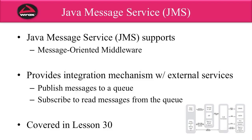Java EE also has support for the Java Message Service, or JMS. JMS basically gives you support for message-oriented middleware. You can send messages back and forth in an asynchronous fashion. JMS is primarily used for integrating with external services. You'll create a message, publish it to a queue, and then another application can subscribe to that queue and read messages from it. This can all happen asynchronously, meaning the producer and the consumer don't have to be online at the same time. This is primarily used for back-end systems and high-volume systems. We cover JMS in lesson 30.